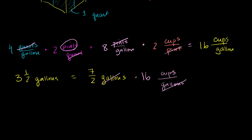So it's going to be 7 halves times 16. So this is going to be 7 times 16 over 2 cups. And then 16 divided by 2, or you could divide 16 by 2 and get 8. 2 divided by 2 is 1. So it just becomes 7 times 8 divided by 1, or just 7 times 8, which is 56. So this is equal to 56 cups.